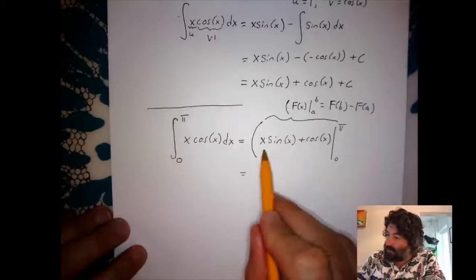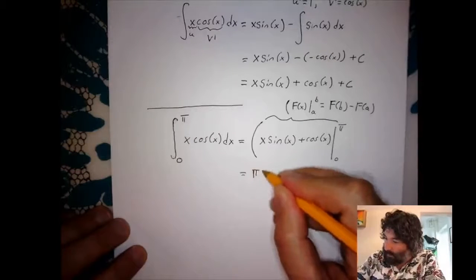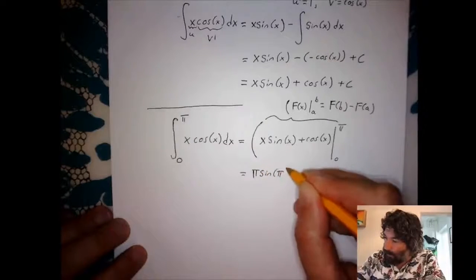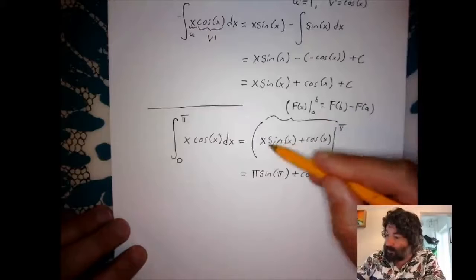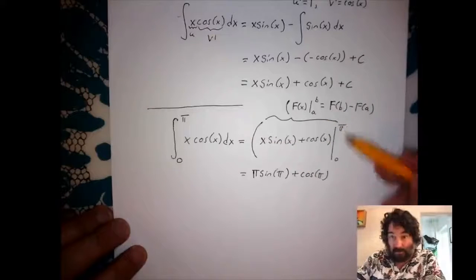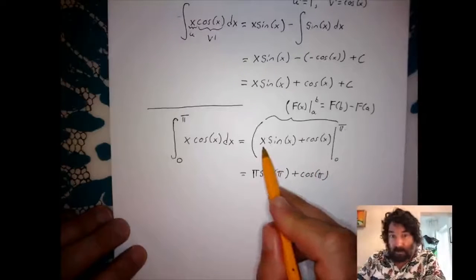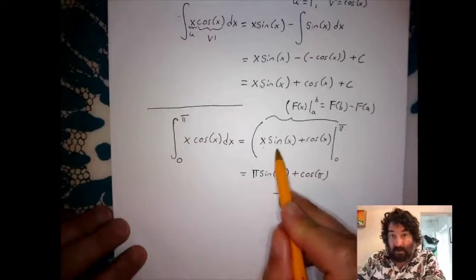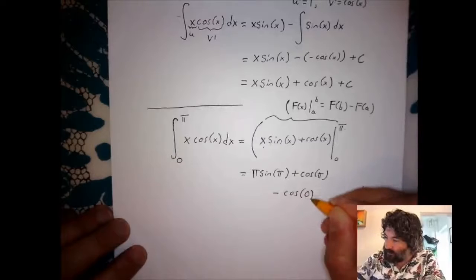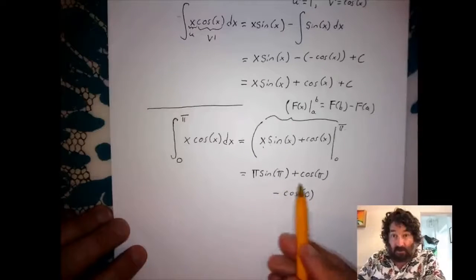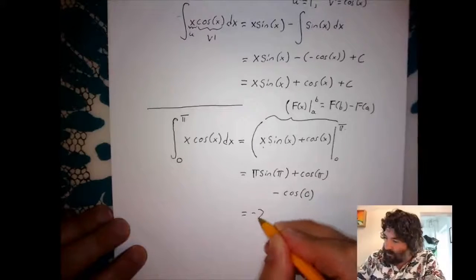We evaluate x·sine x plus cosine x at π: π·sine π plus cosine π. Then minus the same thing evaluated at zero: zero plus (−cosine 0). Sine of π is 0, cosine of π is −1, cosine of 0 is 1. So this equals negative two.